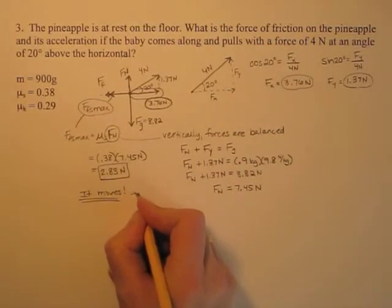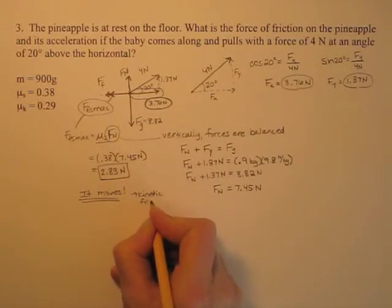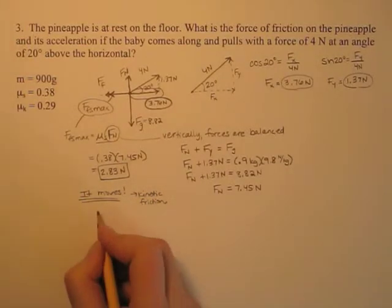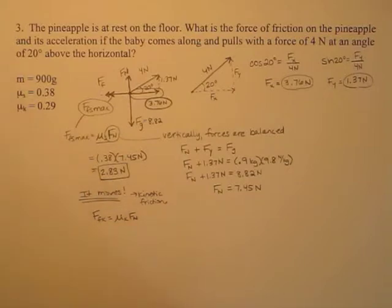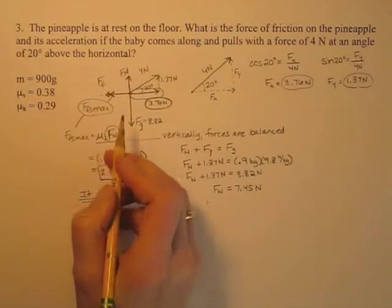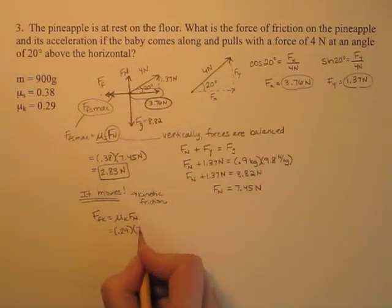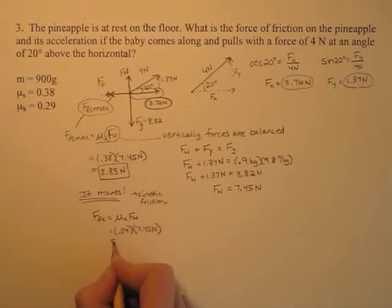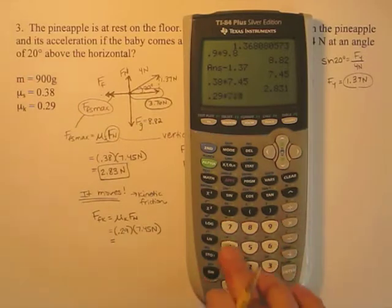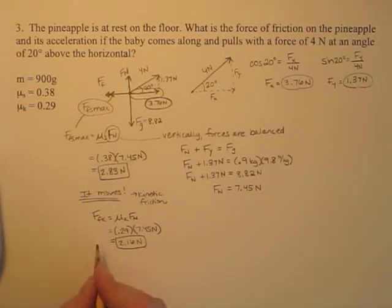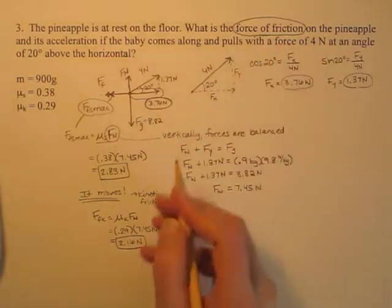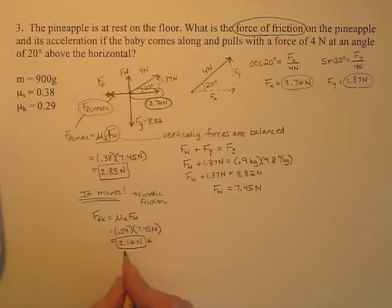Since the pineapple is moving and sliding, we now have kinetic friction. We need to find the force of kinetic friction. The coefficient of kinetic friction is 0.29, and the normal force is 7.45 newtons. So 0.29 times 7.45 equals 2.16 newtons. That is the kinetic friction while the pineapple is moving. So the force of friction is 2.16 newtons — that's one of our answers.